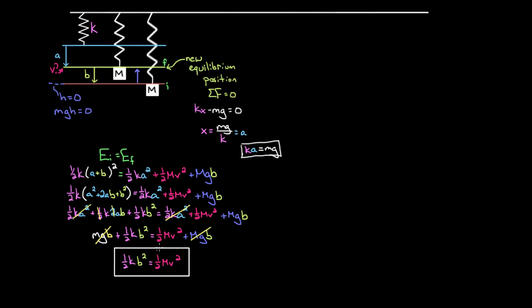This is the key result. When solving vertical spring problems, you can either measure spring displacement from the natural unstretched length and include gravitational PE — and those terms will always cancel — or you can simply measure spring displacement from the new equilibrium position and leave out gravitational PE entirely, getting the same answer. You can think of gravity as simply shifting the equilibrium position down, and then the mass-spring system behaves just as it would on a horizontal surface.